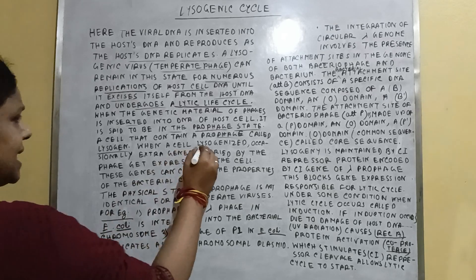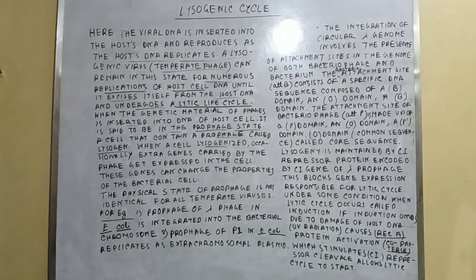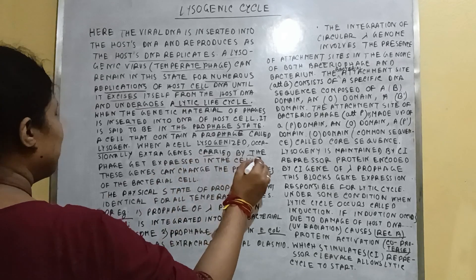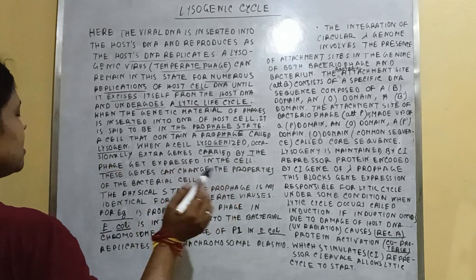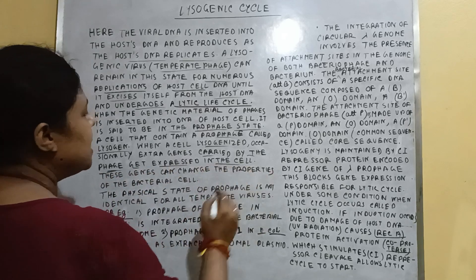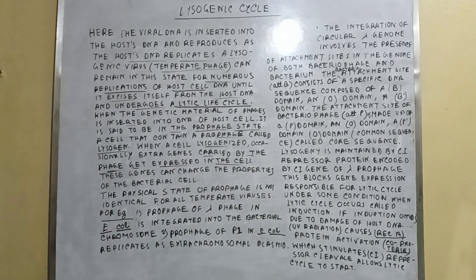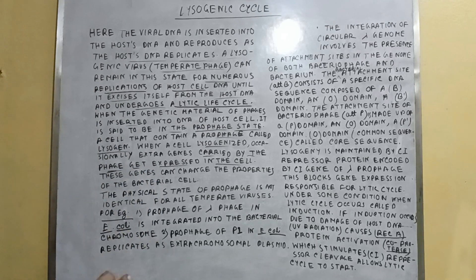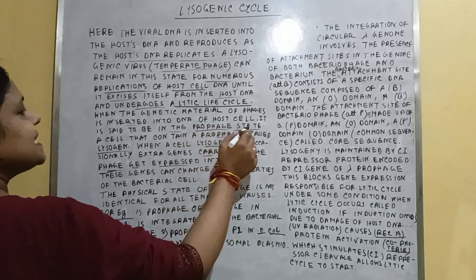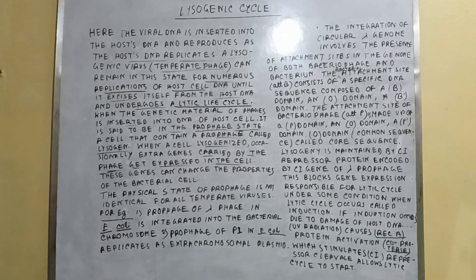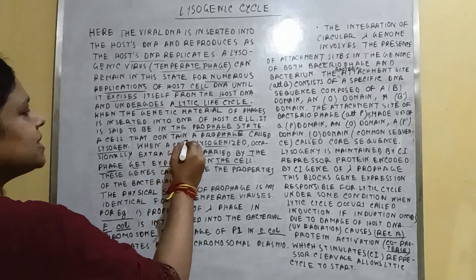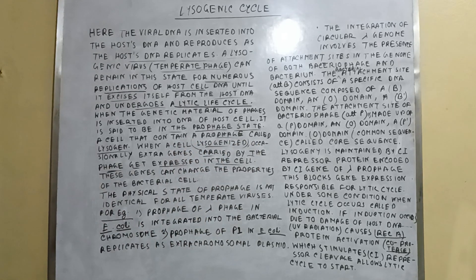As the cell can be lysogenized, occasionally extra genes carried by the phage get expressed in the cell. The viral DNA when it enters within the bacterial cell, this condition is the prophage state, and the bacterial cell that contains the viral DNA remains in the situation that is called the lysogenized situation.